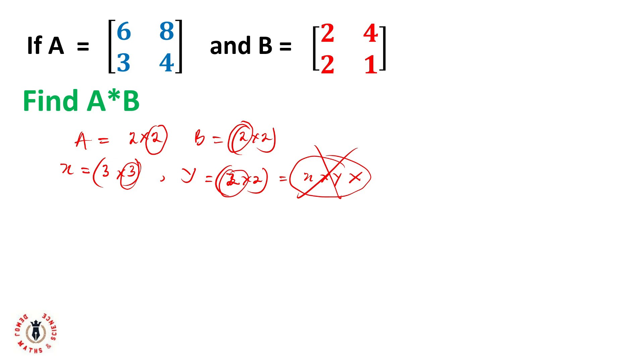We'll see it in action shortly. My matrix A is 6, 8, 3, and 4, while B is 2, 4, 2, and 1. The multiplication of A times B will look like matrix 6, 8, 3, and 4 multiplying matrix 2, 4, 2, and 1.